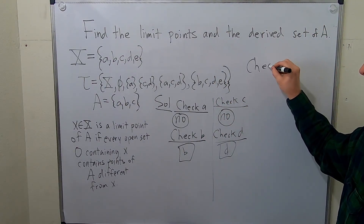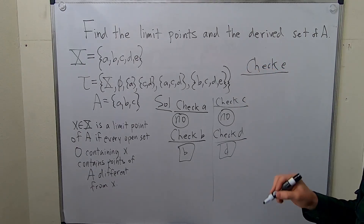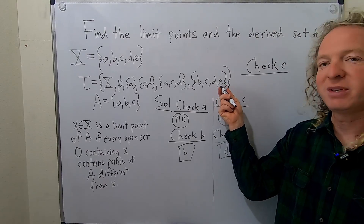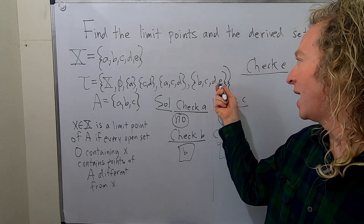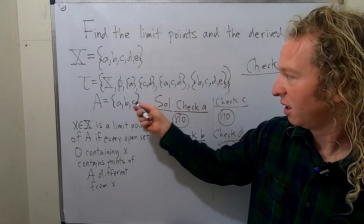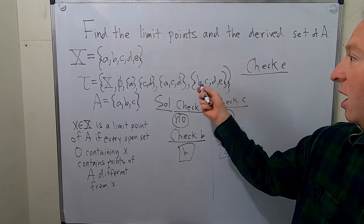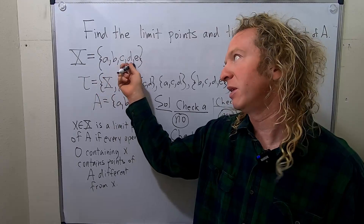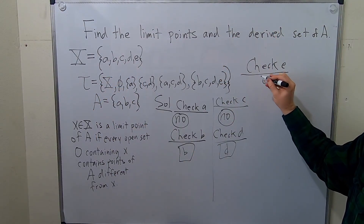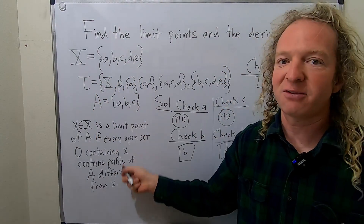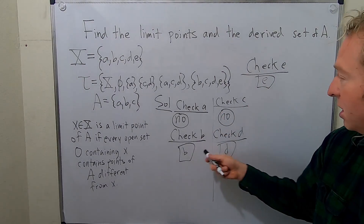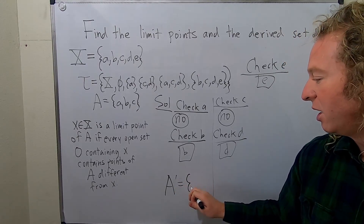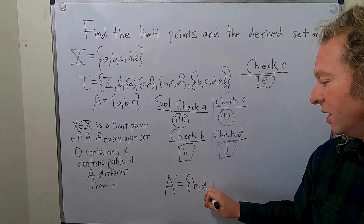Let's check E. Looking for open sets containing E: here is one containing E, and it has B, which is in A and different from E — so that's okay. Several open sets don't contain E. The remaining open set containing E certainly has points of A different from E. Every open set satisfies the definition, so E is a limit point. Our limit points are B, D, and E, so the derived set A' = {B, D, E}.